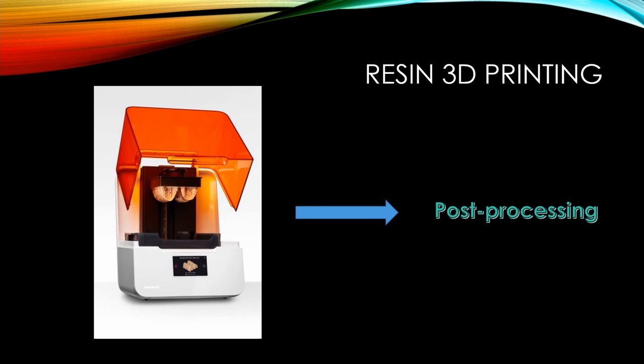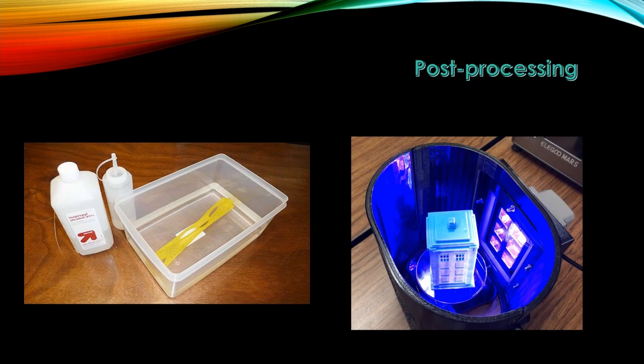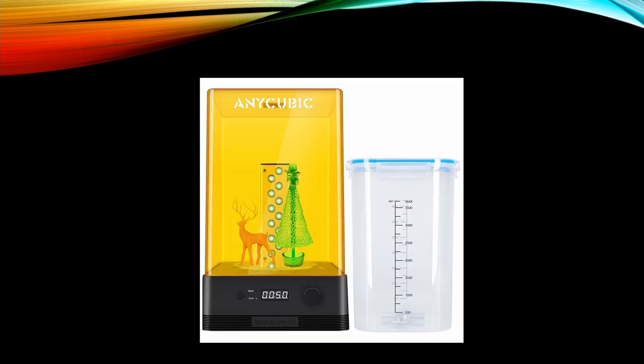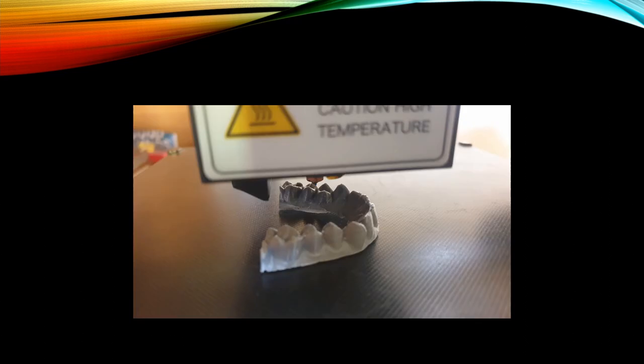After the model is printed, we move to the post-processing step, which is essential especially for resin 3D printers. Any resin 3D printed model needs to go through wash-and-cure post-processing: the model is carefully washed with isopropyl alcohol to remove uncured resin, then placed in a UV chamber to be fully cured. Some companies like Anycubic provide devices that can both wash and cure the final object.